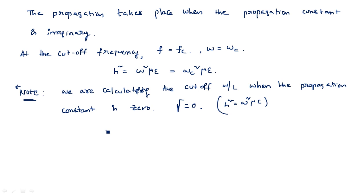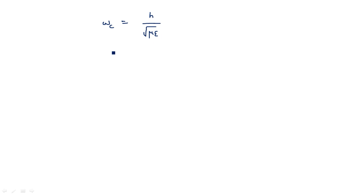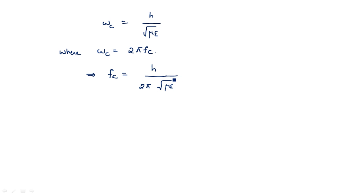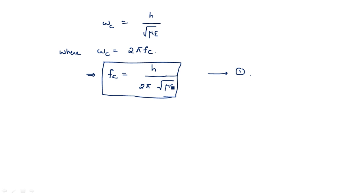From H² = ωc²με, we get ωc² = H²/με, so ωc = H / √(με). Since ωc = 2πfc, it follows that fc = H / (2π√(με)). This is the generalized notation of the cutoff frequency, which does not specify whether it is a TE mode or TM mode.